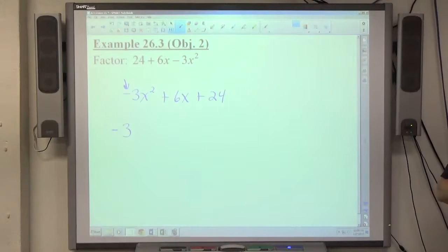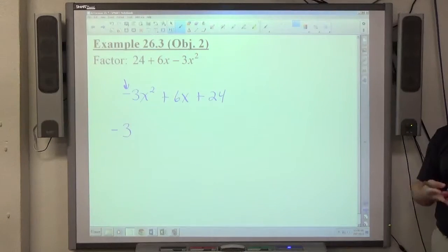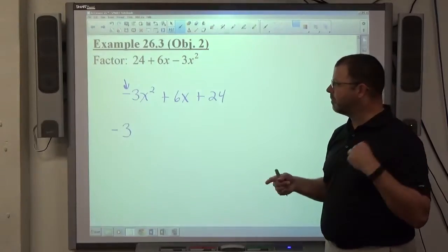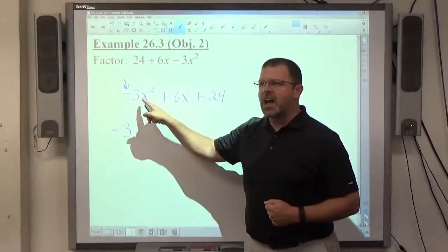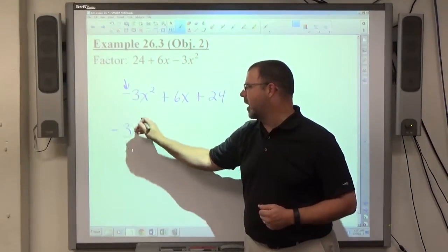Okay, so again, the common factor is found the same way it's always found. What's the biggest number that divides all these numbers? The answer is 3. But the lead coefficient has to be positive. Since it's negative, I'm taking negative 3 out.